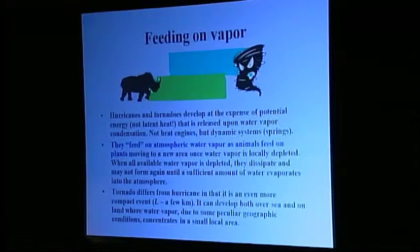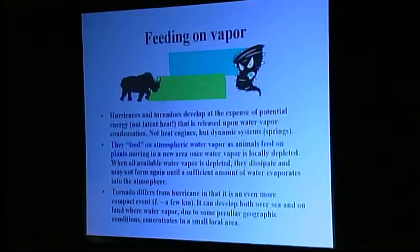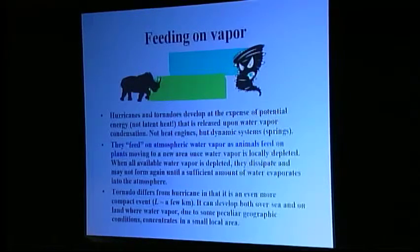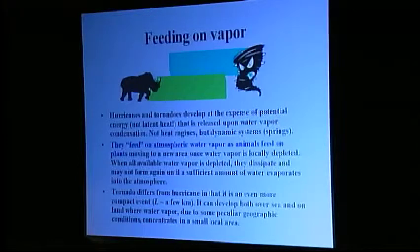They may not form again until a sufficient amount of water evaporates slowly into the atmosphere. This is very important: evaporation is a very slow process, while condensation — that is, water vapor consumption — can occur at an arbitrarily high rate. A tornado differs from a hurricane in that it is an even more compact event, with a horizontal size of a few kilometers only. It can develop both over sea and on land where water vapor, due to some peculiar geographic conditions, concentrates in a small local area.